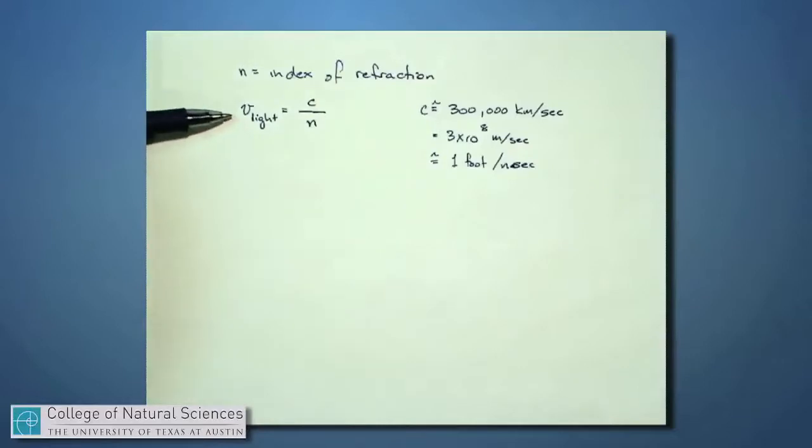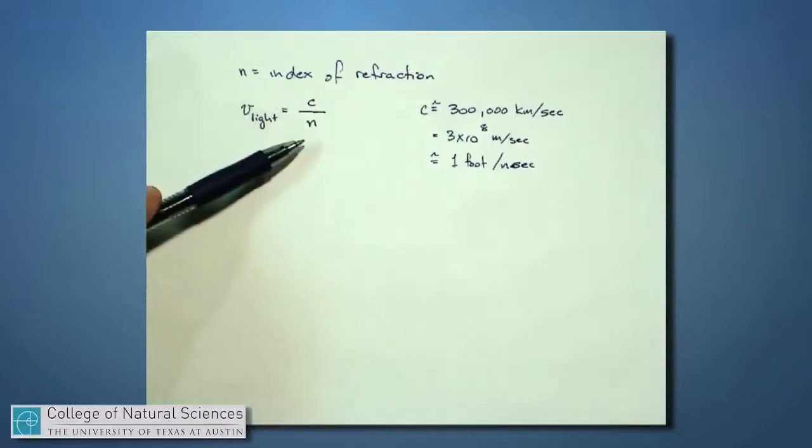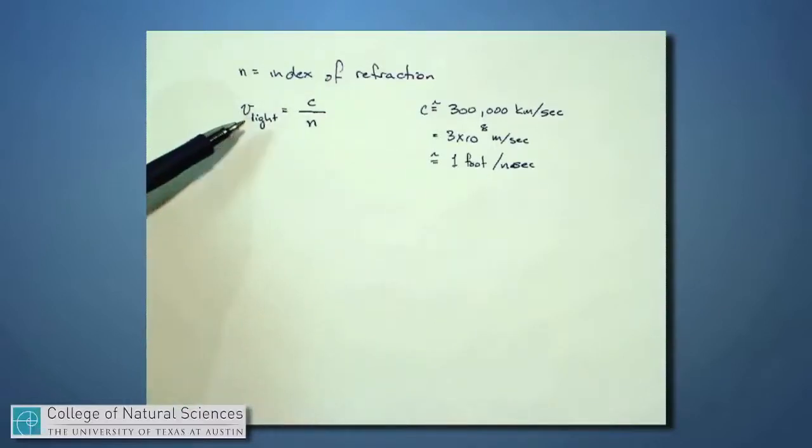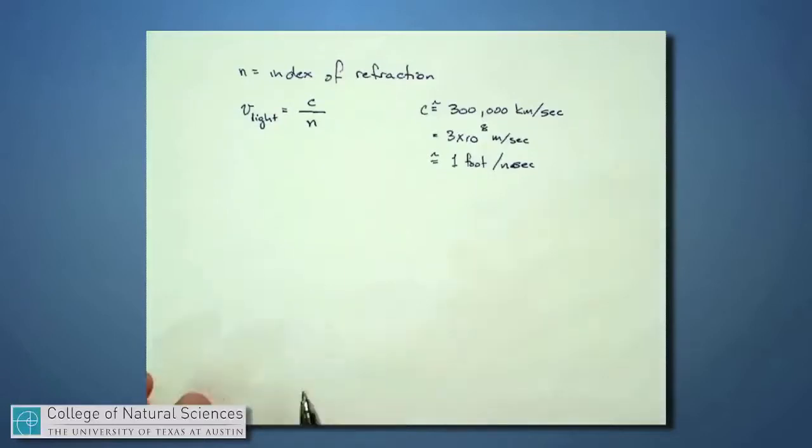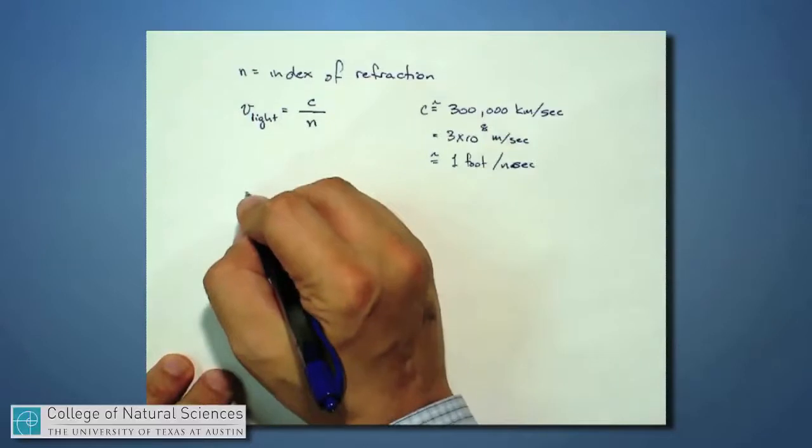So if we were sending light through a particularly dense medium for which n is a large number, v could be as much as 20 or 50 or 100% smaller than c. Just to give you a sense of what n can be for various materials,